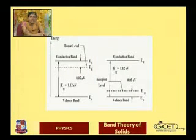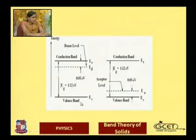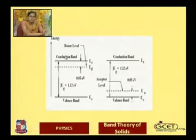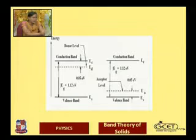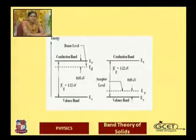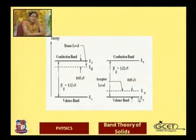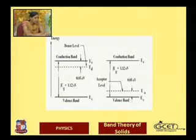In the energy band diagram, there is a transition from the valence band to the conduction band. When a donor impurity is added, the conduction level shifts downward by approximately 0.05 eV. In the acceptor level of p-type material, the valence band rises upward by a similar order of about 0.05 eV.